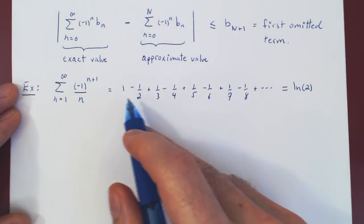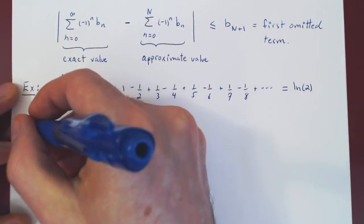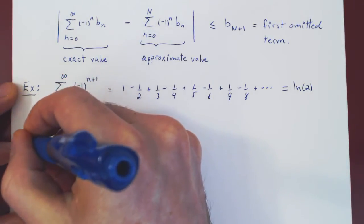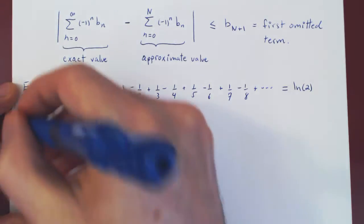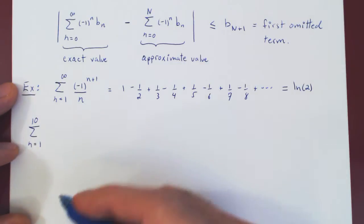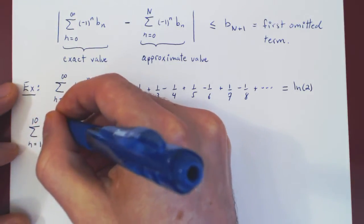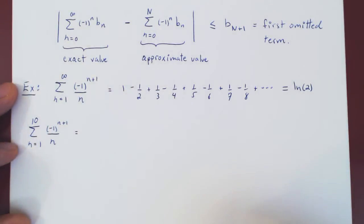So you want to approximate this infinite series, so let's sum the first few terms. So we'll sum from 1 to 10, so the first 10 terms of the series. So let's expand those out.